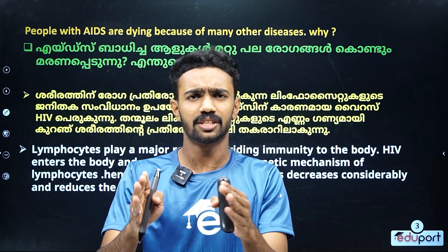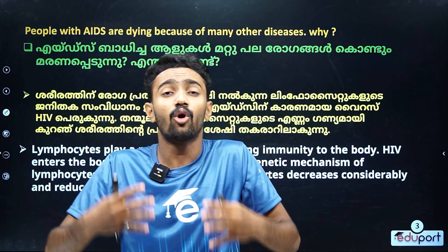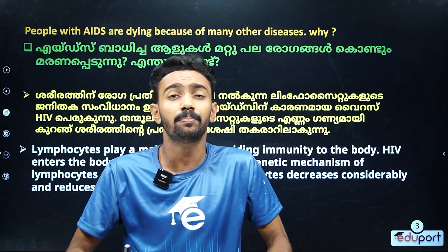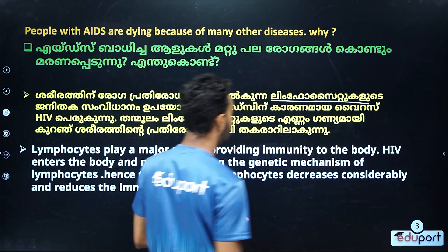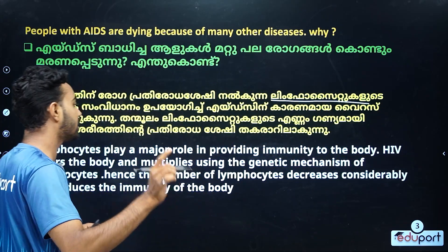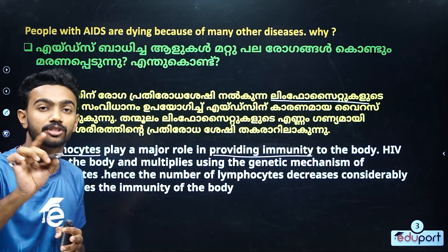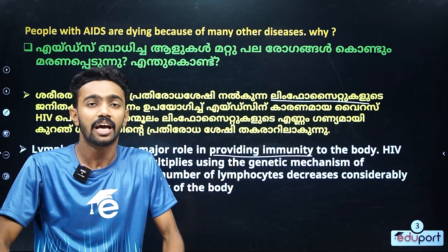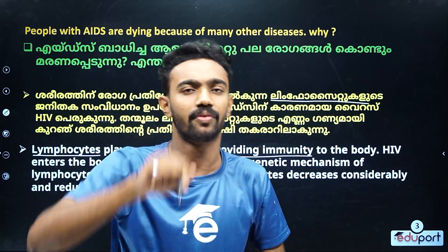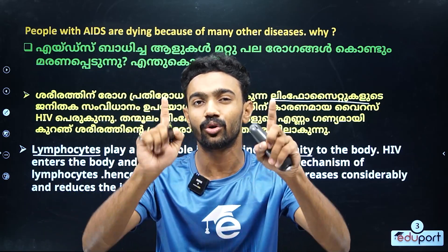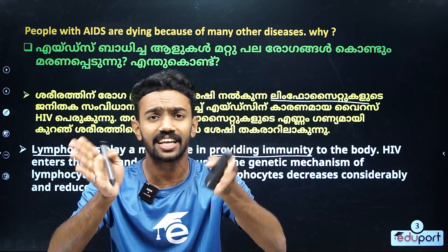There is an HIV virus. This HIV virus is called a body — the body. The cell is the immunity. The cell is called the lymphocyte. That lymphocyte is the genetic mechanism. It is the genetic mechanism. We are HIV. This HIV virus is called a virus.